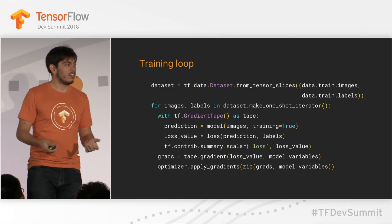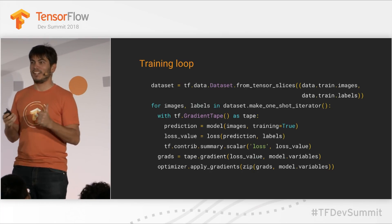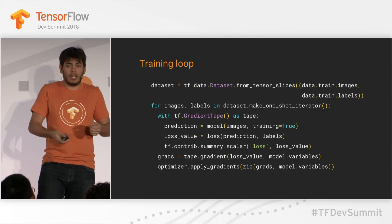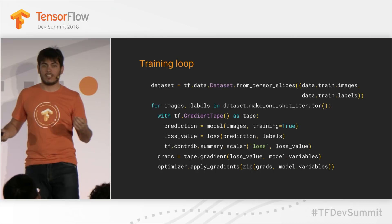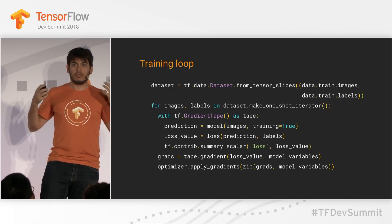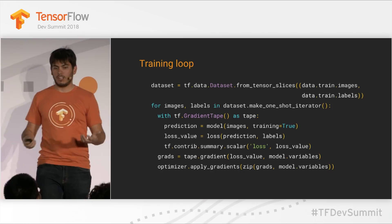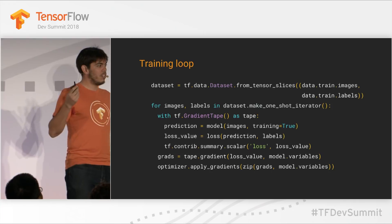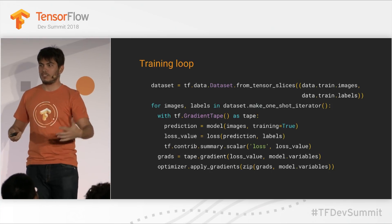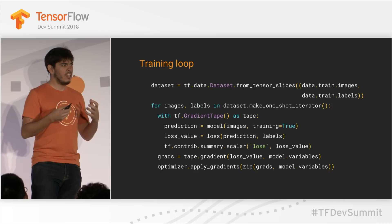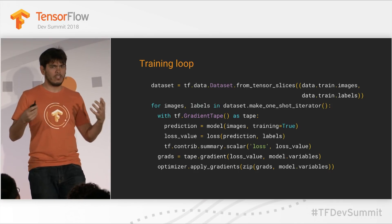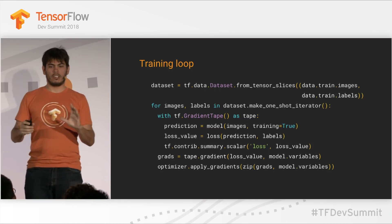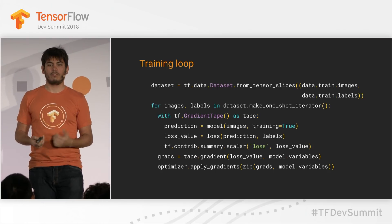Writing training loops in eager, as Derek pointed out, is very easy and straightforward. You can just use a Python for loop to iterate over your datasets — datasets work in eager just fine with the same high performance you get in the graph execution engine. Then you can do your predictions, compute your gradients, apply your gradients, and do all the things you're used to doing. But really, the interesting thing about eager is not when you're writing finished code that already works — it's when you're still developing and want to debug.